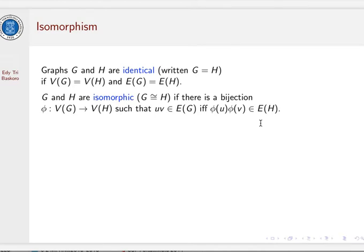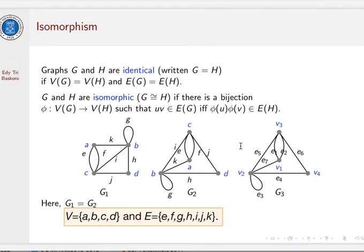For instance, graph G1 and G2 are identical since the vertex set of G1 and G2 are the same, which is V = {a, b, c, d}, and they both have the same edge set E = {e, f, g, h, i, j, k}. And in this case, we draw the same graph in different ways.